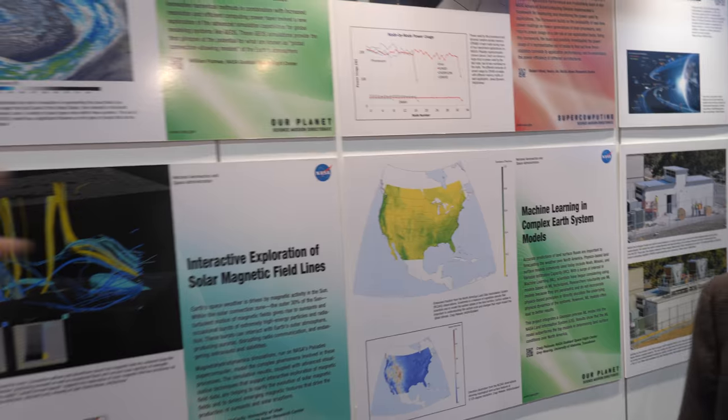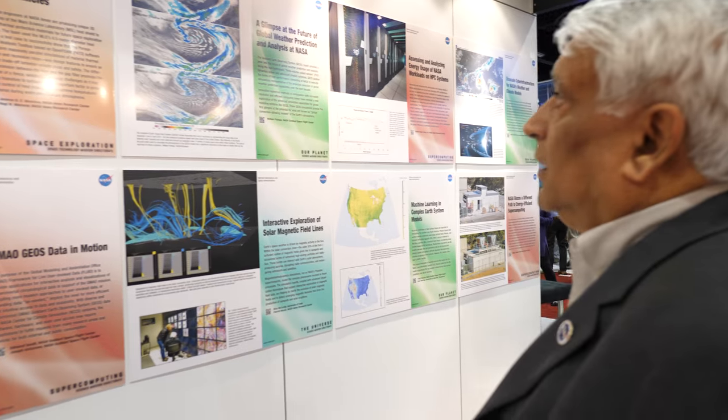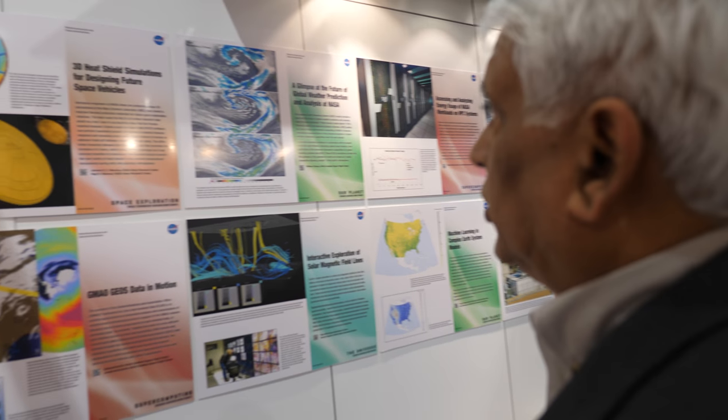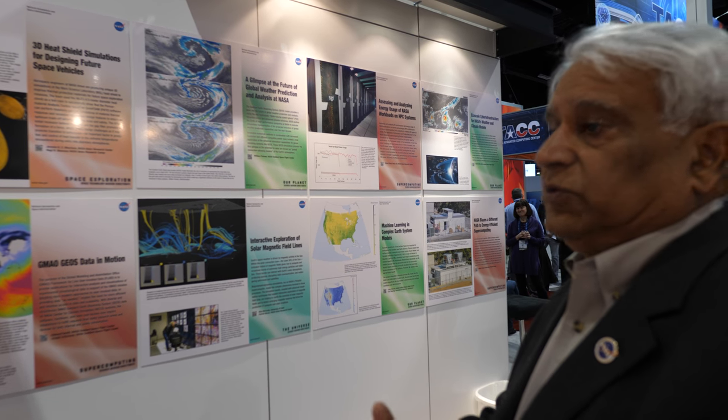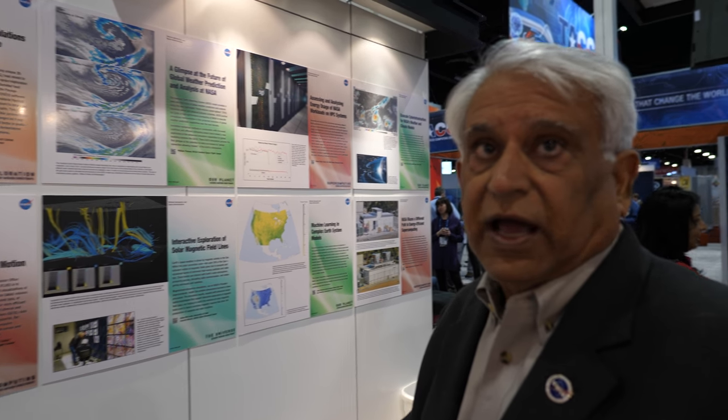Looking at these displays illustrating the different kinds of work that NASA does. This is designing heat shields for space vehicles. When they come down, they have to face a lot of heat. NASA is looking at different kinds of materials to put in there so that the vehicle will be safe as it comes down in the atmosphere.